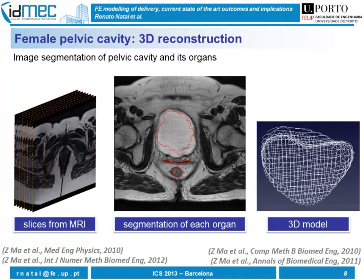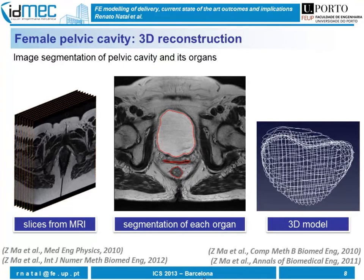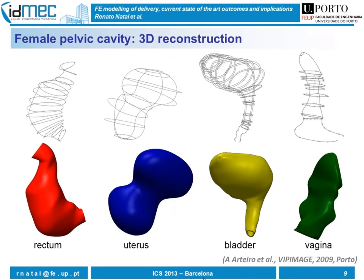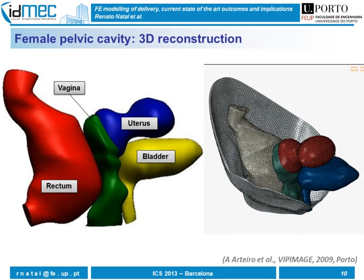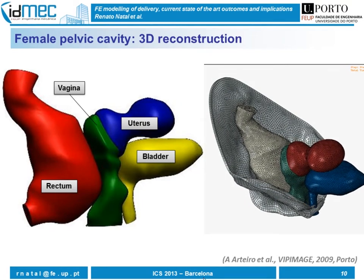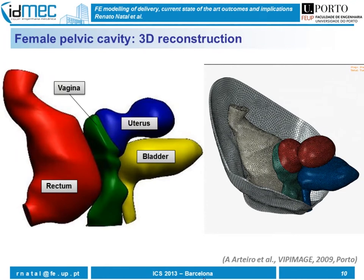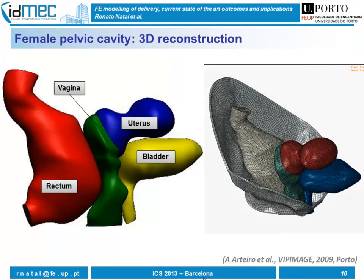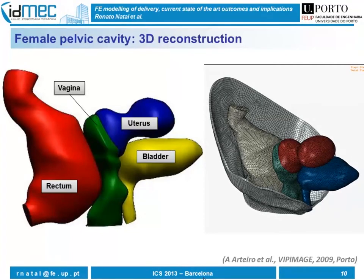Concerning the solid model, in general we use MRI images. For each slice, we identify the structure we want to analyze and establish its contour. In the end, we have a 3D solid model. If we have different structures, we obtain separate solid models for each one, and after that we can obtain a biomechanical model. The triangles and quadrilaterals you can see in the picture on the right are what we call finite elements.